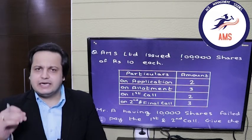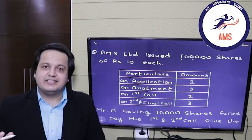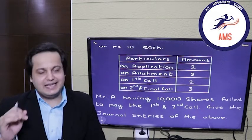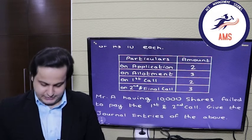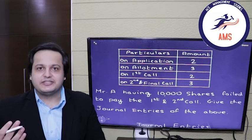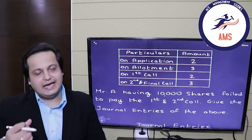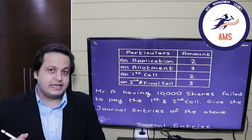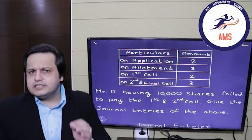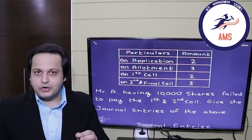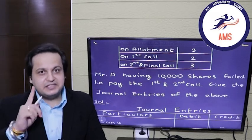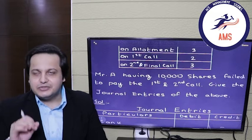Let's move forward with the question, which is the best way to learn. AMS Limited has issued 1 lakh shares of rupees 10 each. We have been given the installments: application, allotment, first call, and the second and final call — four installments. In the additional information, Mr. A, who held 10,000 shares, defaulted on the first call and the second and final call. We will not have to calculate the number of shares held by the defaulting party because this is not a pro-rata allotment.